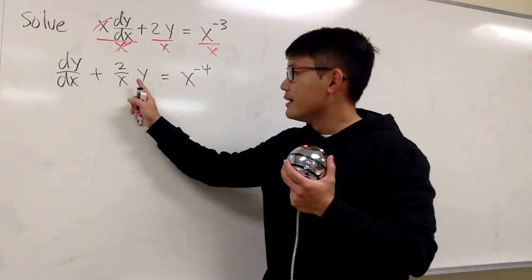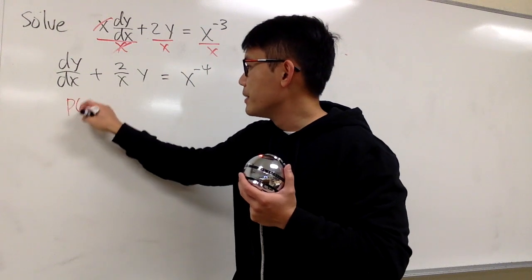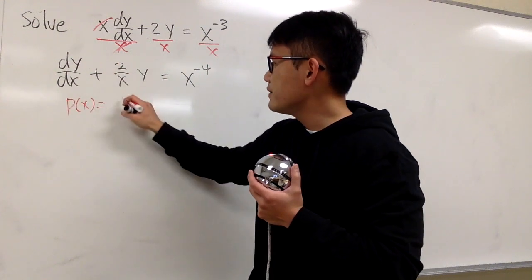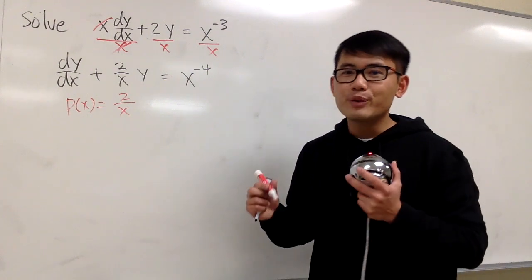Standard form, right? And this will be the p of x. So you know, the p of x is positive 2 over x, and we are ready to find the integrating factor.